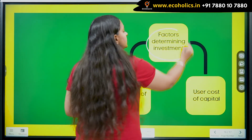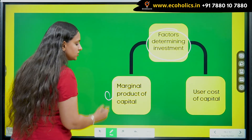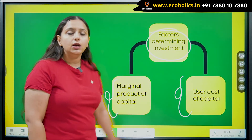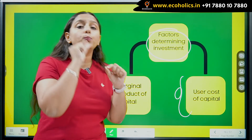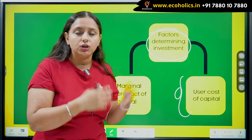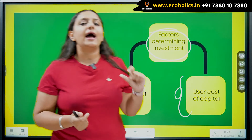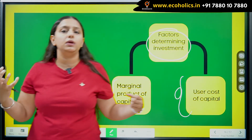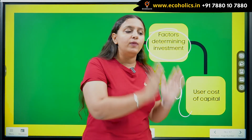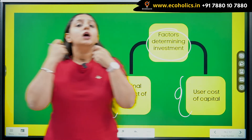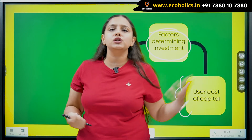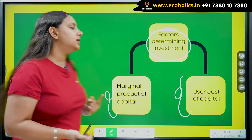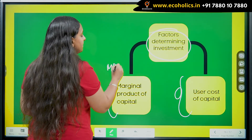The first factor determining investment is the marginal product of capital (MPK). The other is the user cost of capital. Marginal product of capital is simply the increase in the total output of your firm after using one additional unit of capital. When I use one unit of capital, how much does it increase my output? If by using this new capital I am able to produce 100 extra units, then 100 units is the marginal product of capital. Whatever extra output you can produce by employing one additional unit of capital is MPK, represented as MPK under this theory.